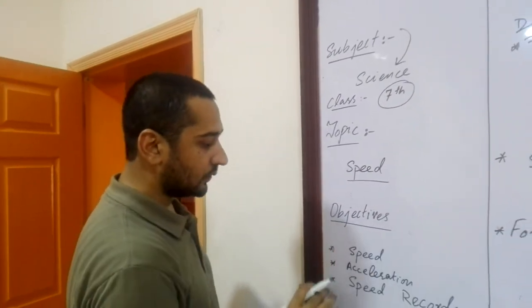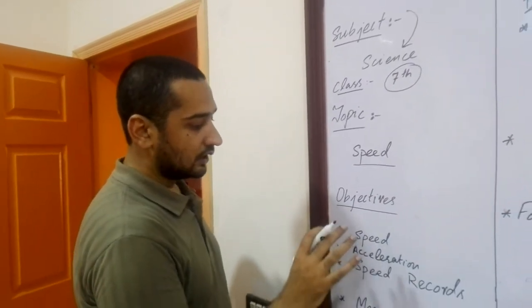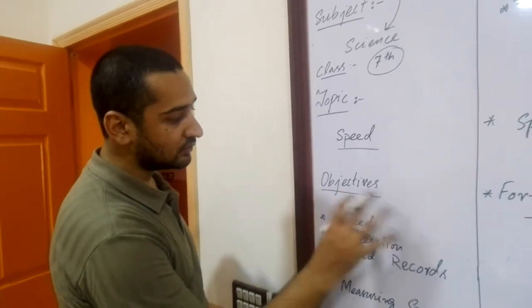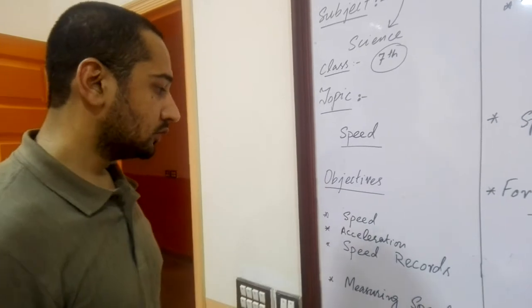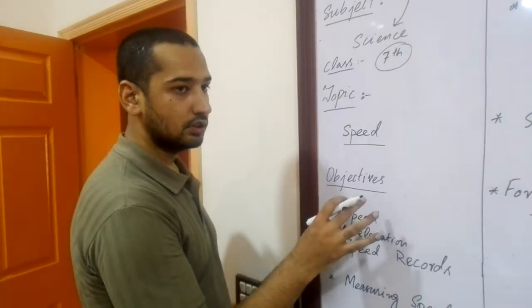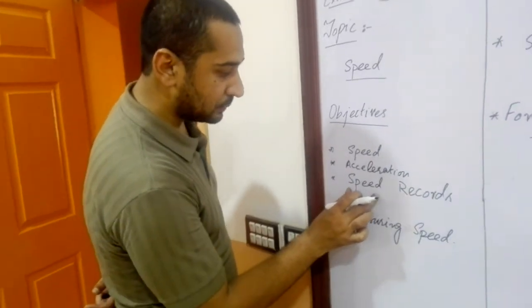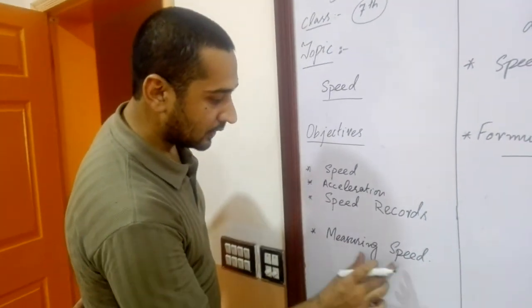Basically for the subject science for 7th class. The objectives of today's lecture are speed, acceleration, speed records, and measuring speeds.